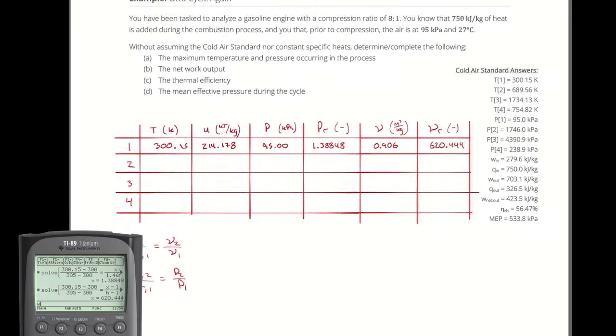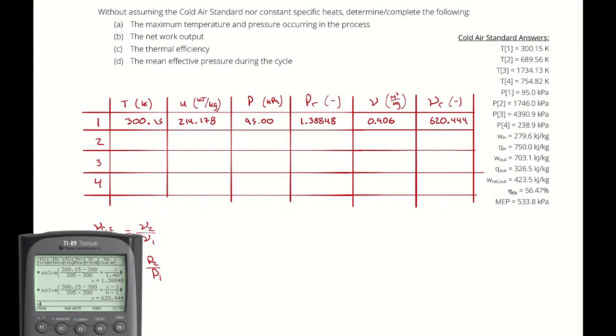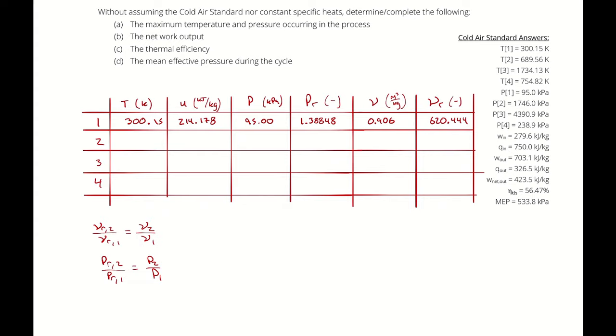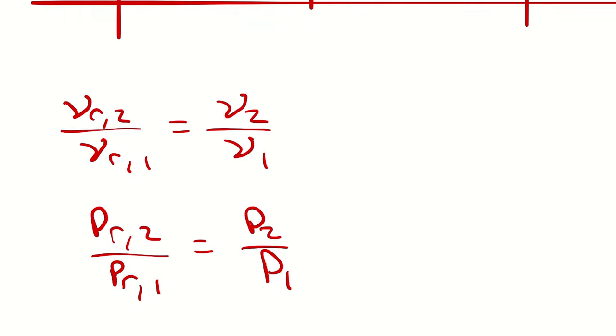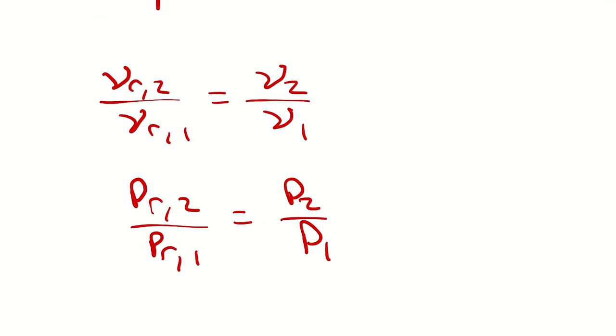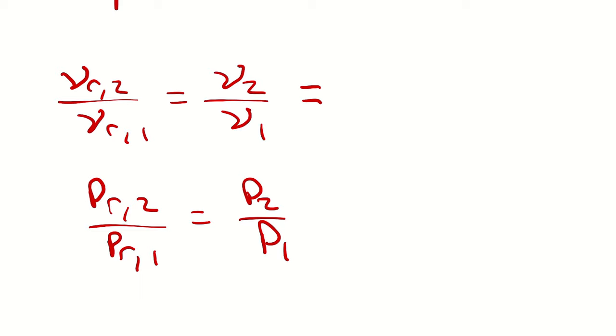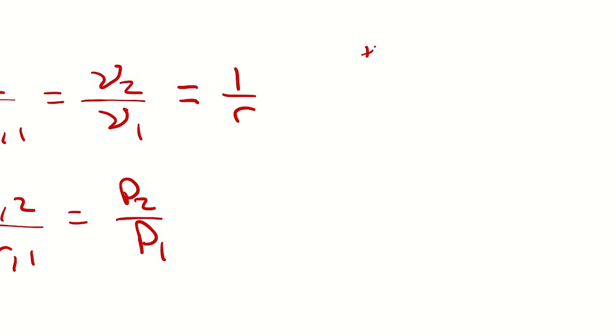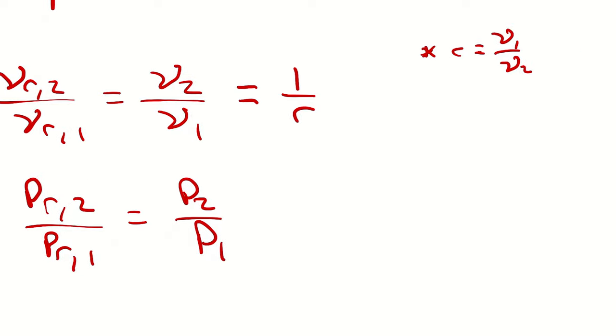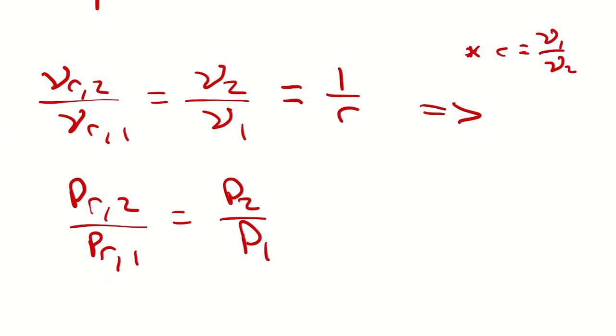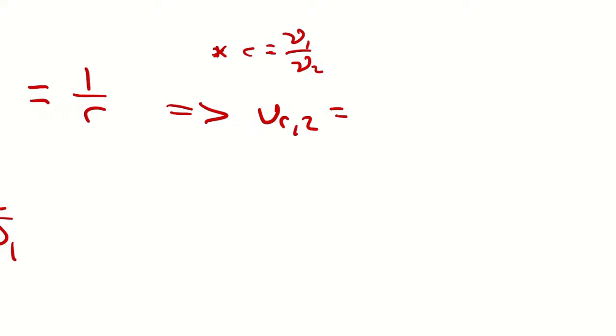That gives us our values for state number one. Now how to get to two? I get to two the same way that I got to two the previous time. I used the isentropic ideal gas equations. The difference here is I'm not using the form that has temperature in K, I'm using these two equations right here. What I'm going to do is recognize that V2 over V1 is a parameter I know, it's 1 over r. Because r was defined as the big volume over the small volume. Therefore V2 over V1 is 1 over r.